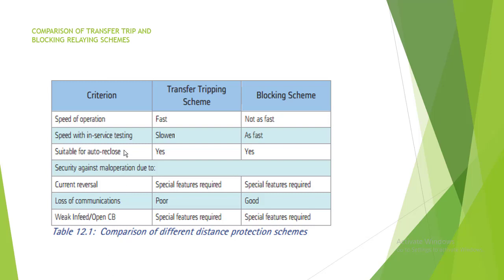Now we will see one chart which is also available in the Network Protection Automation Guide. This chart has three columns: column one is the criteria, column two is the transfer tripping scheme, and column three is the blocking scheme.